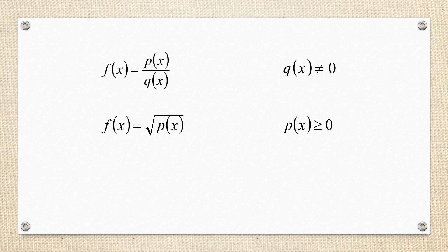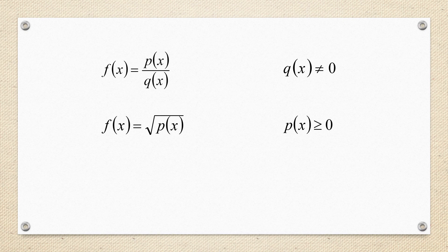Let us consider the function of the form root of p(x). The function is defined only when p(x) is greater than or equal to 0, that is the function inside the root is always positive. If it becomes negative, then it will go for complex numbers, which is not defined. Therefore, the function is defined only when p(x) is greater than or equal to 0.